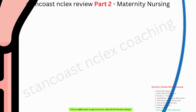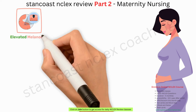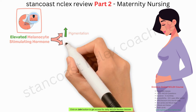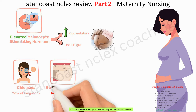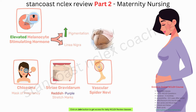Pregnancy also has visible effects on the skin. Elevated melanocyte-stimulating hormone results in increased pigmentation, including the appearance of the linea nigra on the abdomen. Chloasma, often referred to as the mask of pregnancy, may develop on the face. Reddish-purple stretch marks known as striae gravidarum may emerge on various body parts. Vascular spider nevi might appear and hair growth may accelerate.